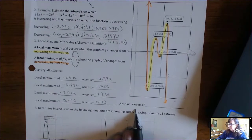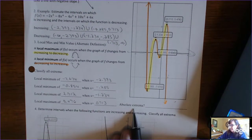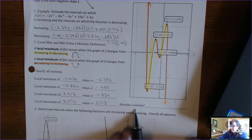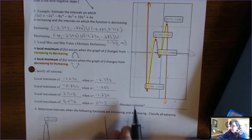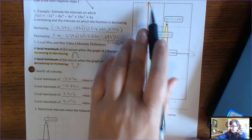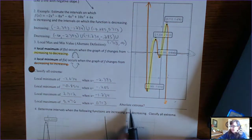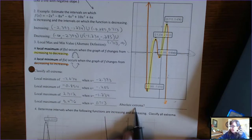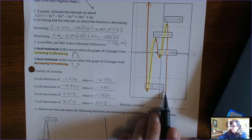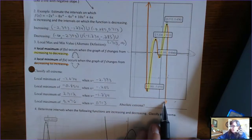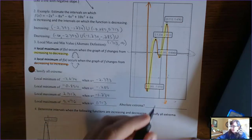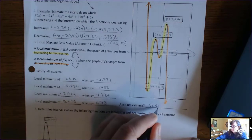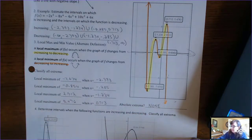Absolute extrema: are there any absolute extrema? Is there a y-value that's higher than all the other y-values? No, because this function goes on forever and ever. Is there any absolute minimum — any y-value lower than all the rest? No, because it's going on forever down towards negative infinity. So there are none.